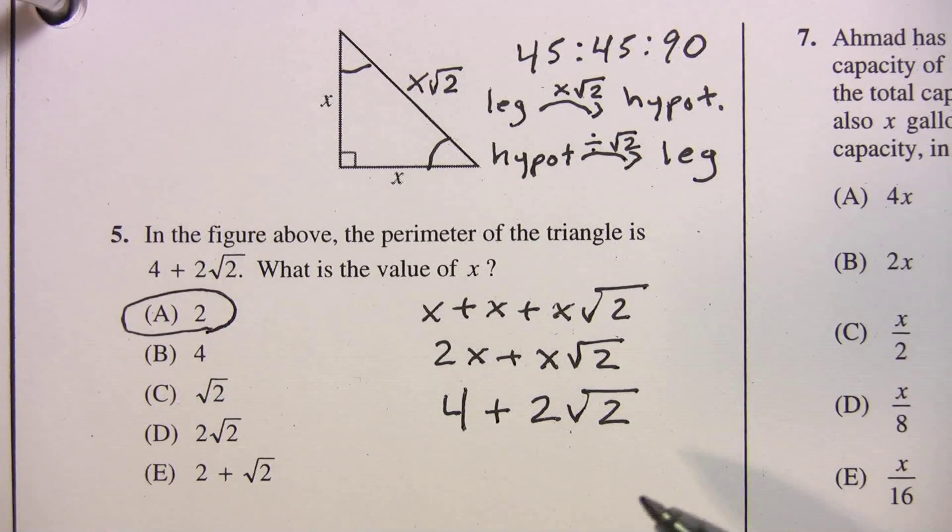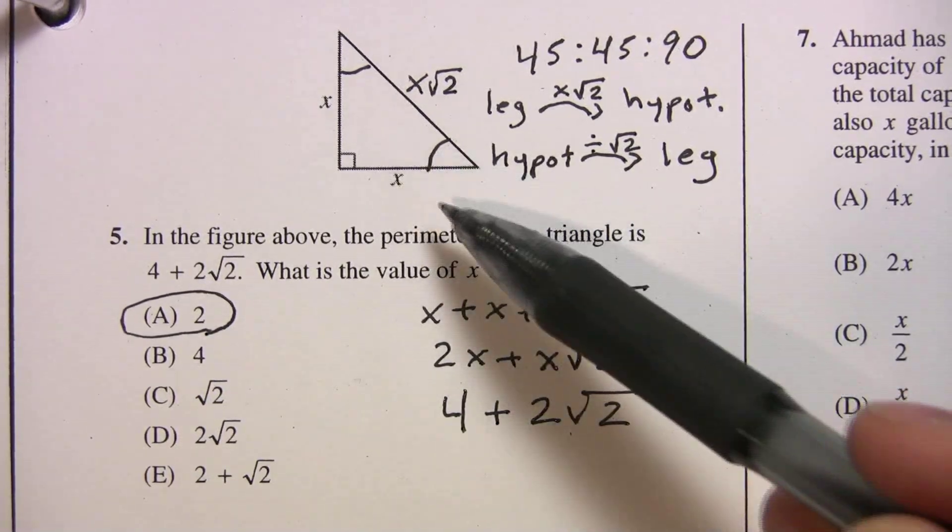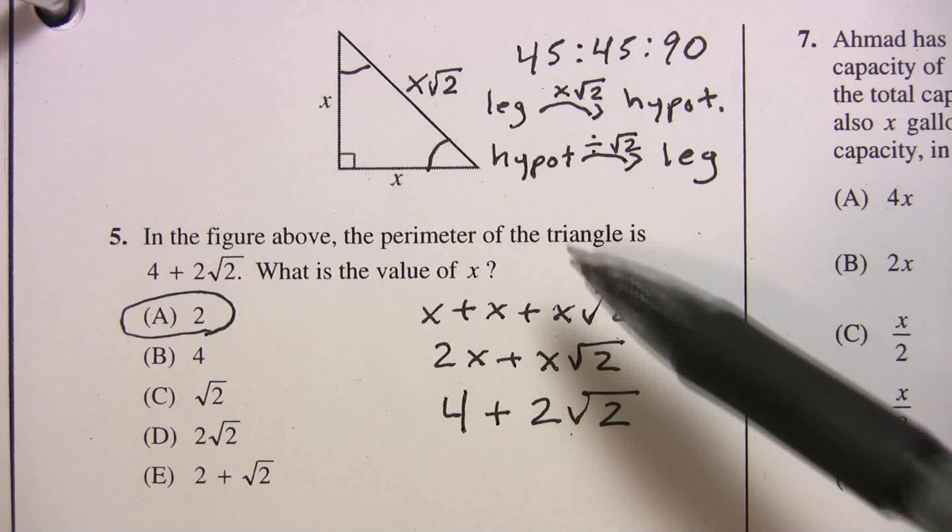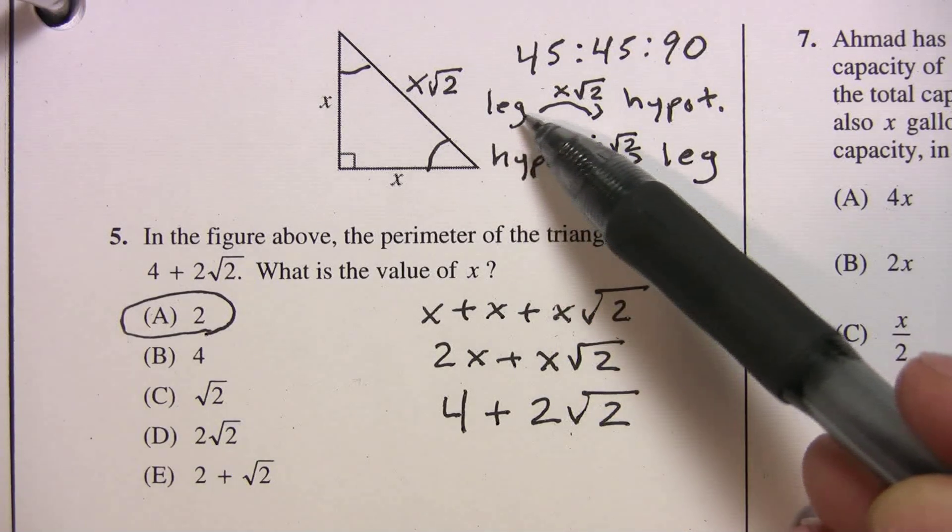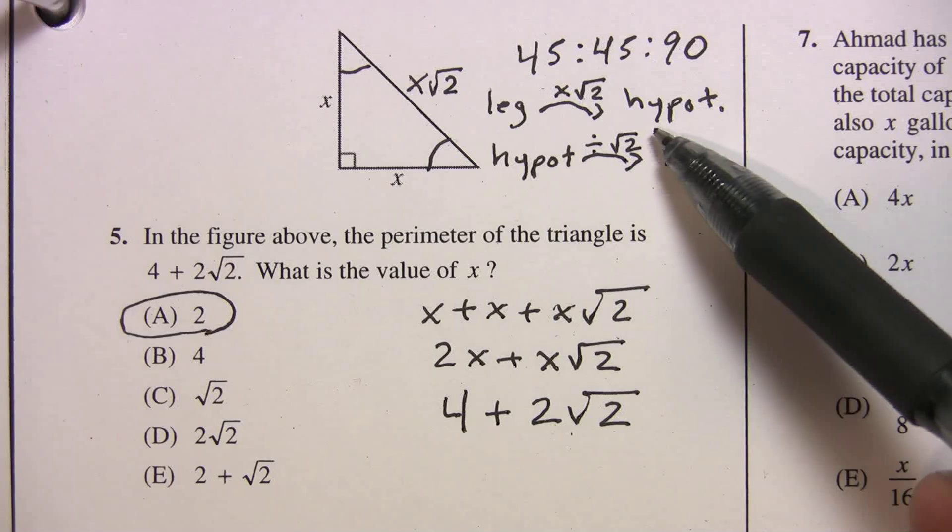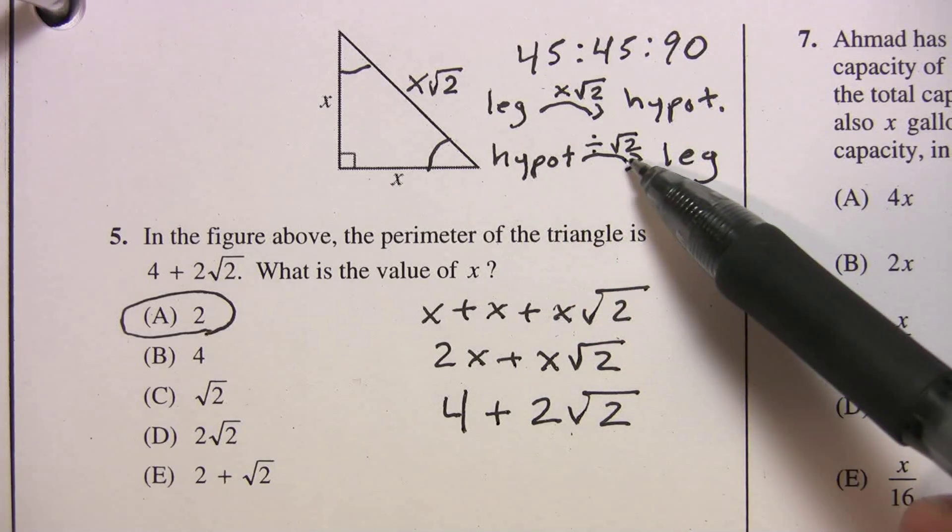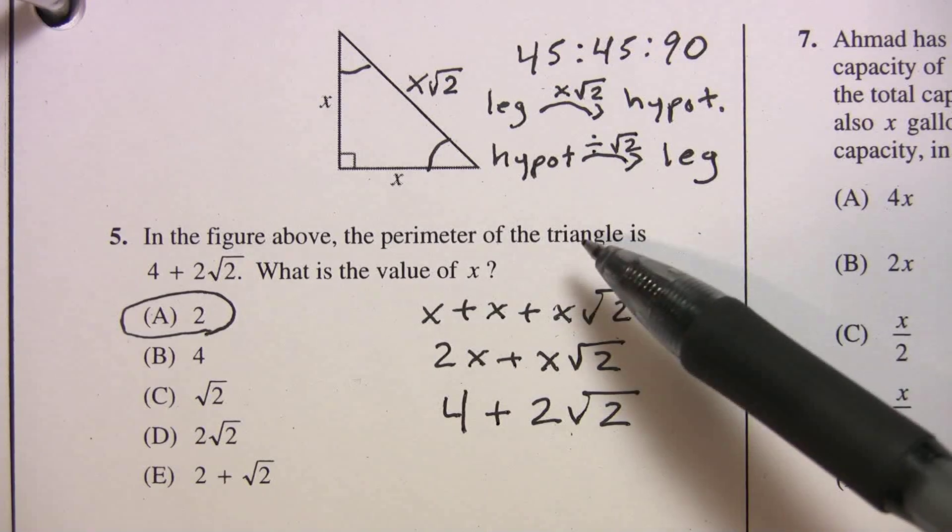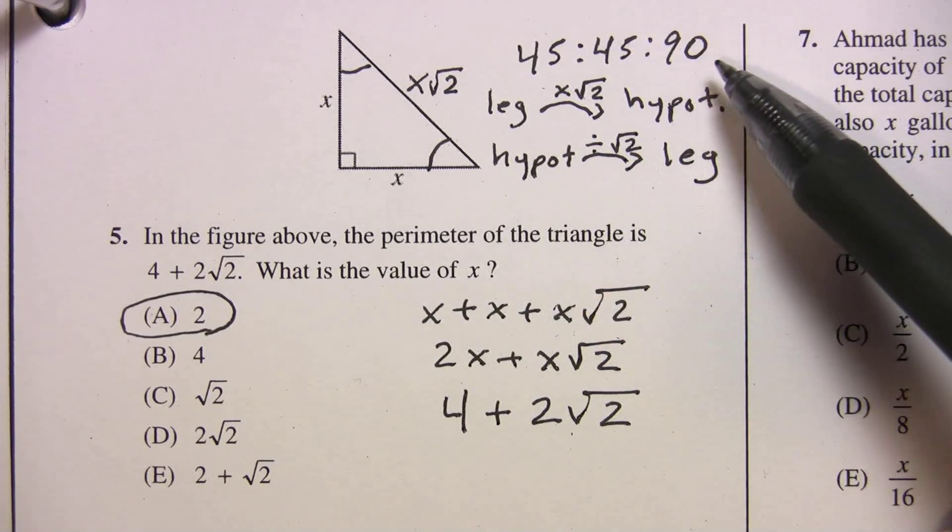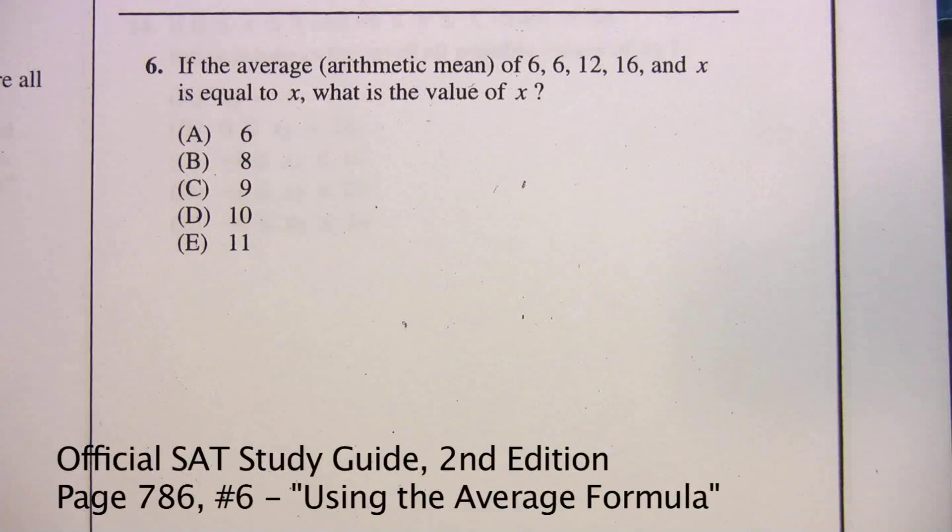So this is one way of avoiding Pythagorean theorem and wasting time with calculations. Just know when you have a leg, you multiply by radical 2 to get the hypotenuse. When you have the hypotenuse, you can divide by radical 2 to get the leg. And again, this only works in 45, 45, 90 triangles.